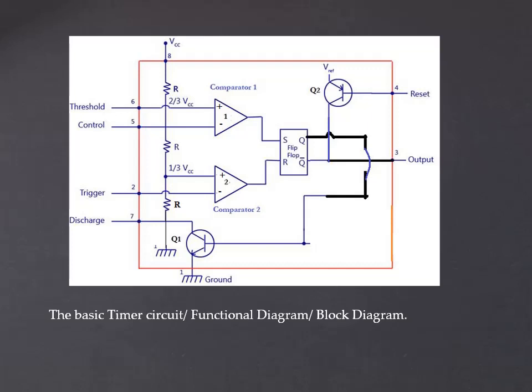The next pin is the control voltage, pin number 5. This pin has a fixed voltage of 2 by 3 VCC. Any external voltage applied to this terminal will change the threshold as well as the triggering voltage 2 by 3 VCC. By applying a voltage to this pin, the pulse width or duty cycle of the output waveform can be varied.